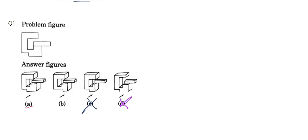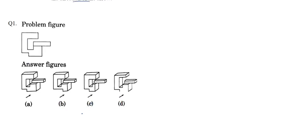Now let's check the difference between option A and option B. The only difference is this base line — here we have a long line and here we have only a thick line. This line is basically joining with the center interior line, but this line is not joining with the interior line. In option B, the interior line and the below line are both joining with no space between them, hence option B is also not correct. Therefore, the correct answer to this question is option number A.